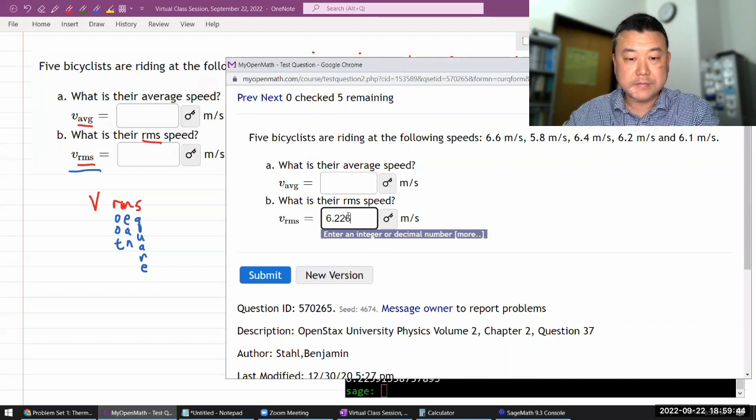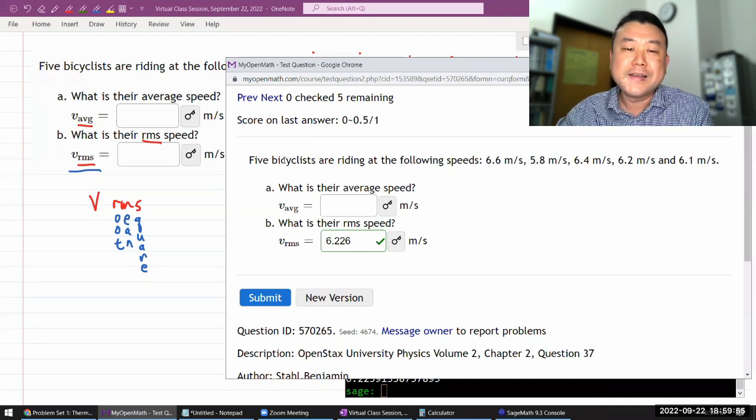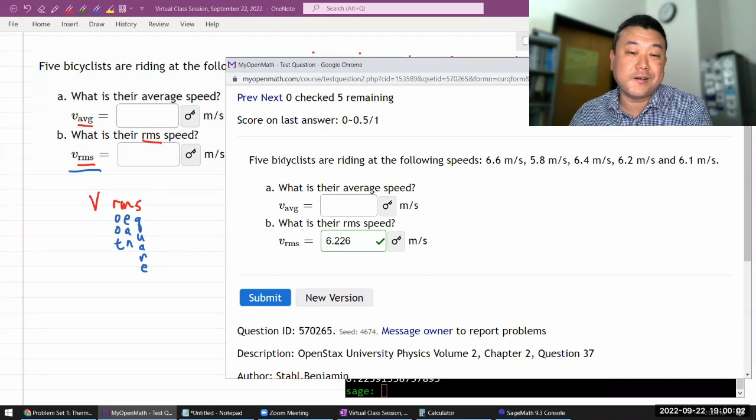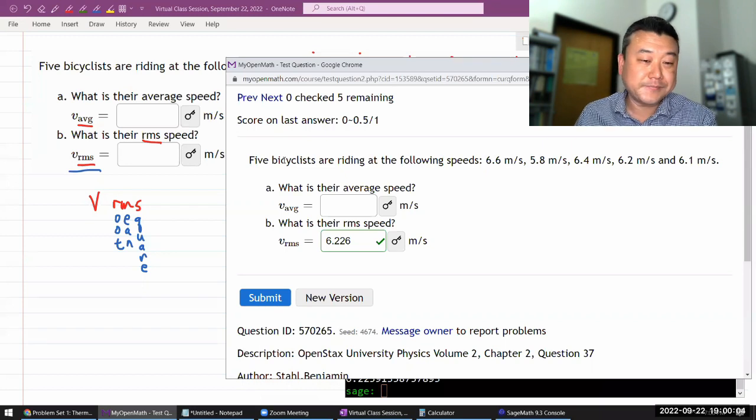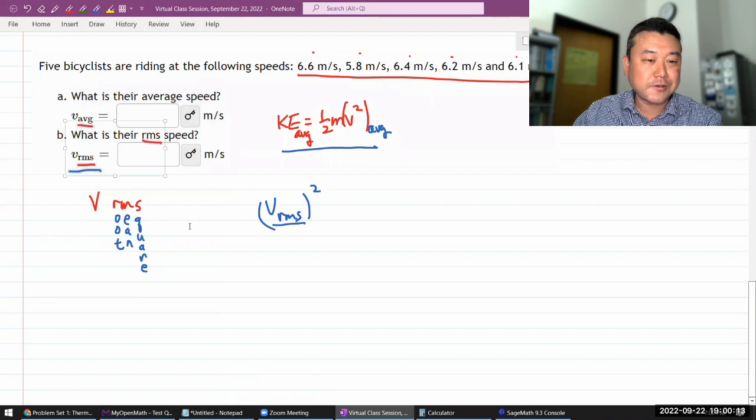And what's nice about this particular number is suppose someone asked you what is the average kinetic energy of these bicyclists, and assuming they're identical bicyclists with identical mass, then all you have to do is do one half their identical mass times V RMS squared. That'll give you their average kinetic energy. So yeah, I think that's the reason I wanted to cover this question, to talk a little bit about RMS speed that I don't think I've lectured on. So it was leaving some people confused.